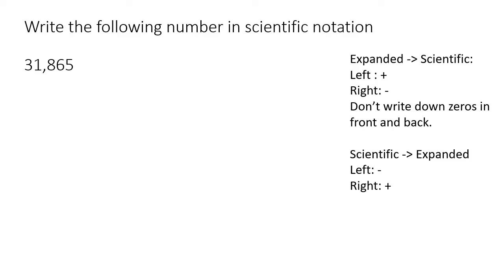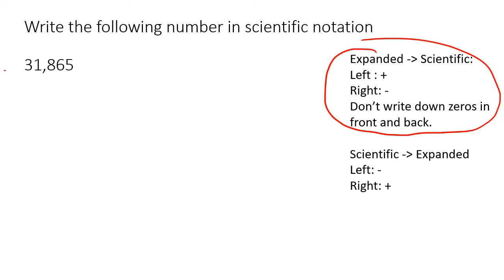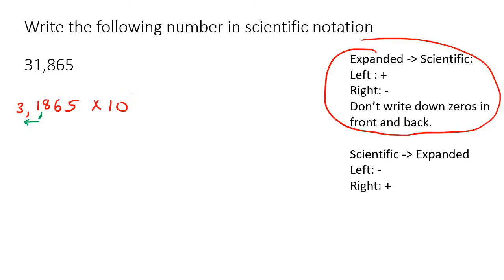Next example — write the following number in scientific notation, so we're going from expanded to scientific. Any zeros at the back? No. Any zeros in the front? No. So write out the first number, put a comma, and write out all the other numbers. Say times 10. The comma moved one place to the left, so it's a positive 1. Your teacher might say you can leave out the 1 — having a 1 there or not is the same thing, so see what your teacher prefers.